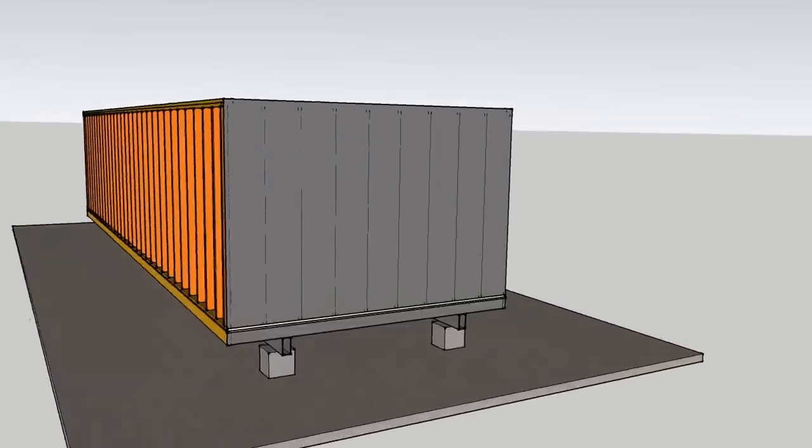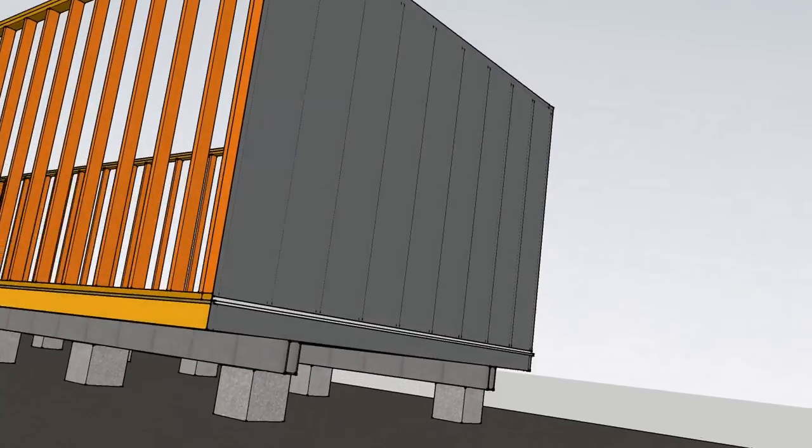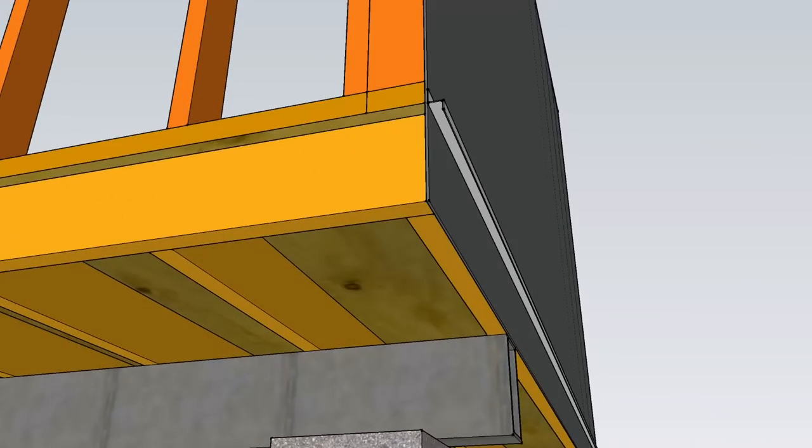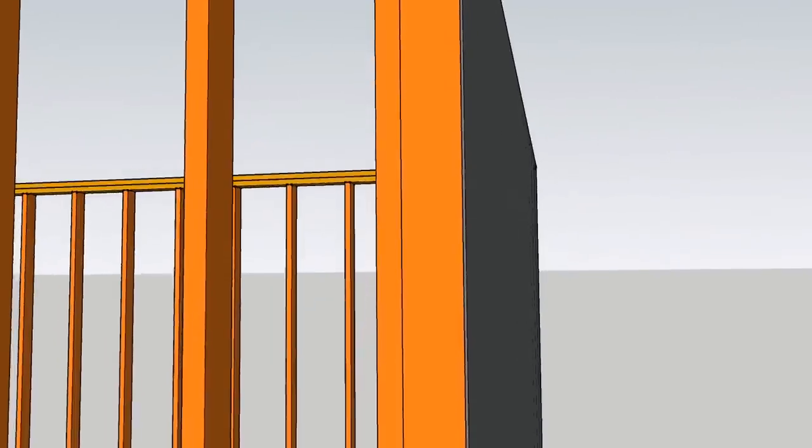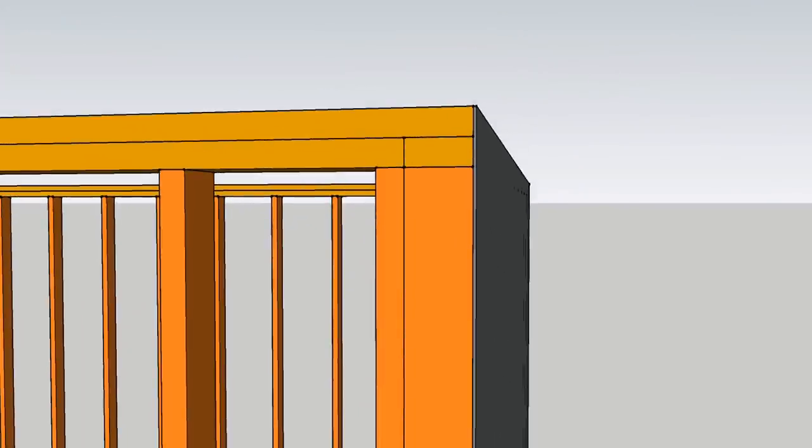The first thing we're going to do in this video is take a look at one wall on a mobile home to give you an idea of how the T111 is actually installed or the plywood siding.